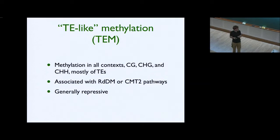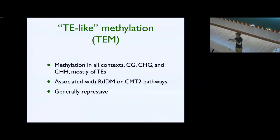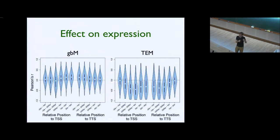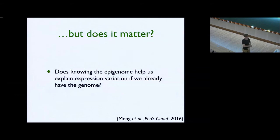This RNA-directed DNA methylation is basically a small RNA that targets a region, somehow leading to enzymes putting on methylation, which is probably a guide for histones changing, which leads to chromatin being compacted and silencing transcription. Something is known about these pathways and this is generally repressive. We calculate the correlation coefficient between expression and methylation level across all the lines per position, then average across all the genes. Inside the gene body there's a positive correlation between methylation and transcription, whereas for the TE-like methylation, it tends to be negative.